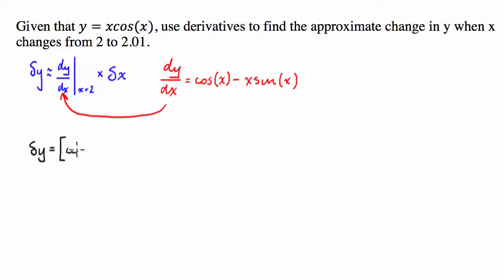We've got cosine, now 2, I'm going to assume it's in radians. So the cosine of 2 minus 2 times the sine of 2. And I have to multiply that by the change in x. Now it changes from 2 to 2.01, so the change in x is 0.01.